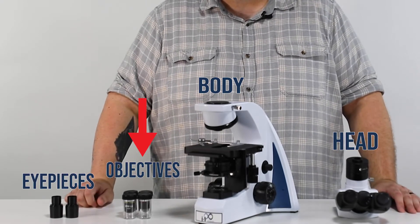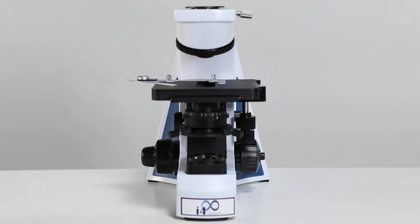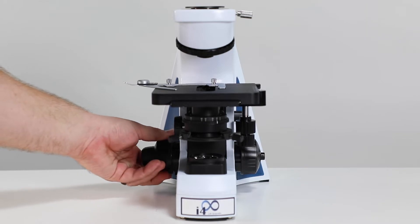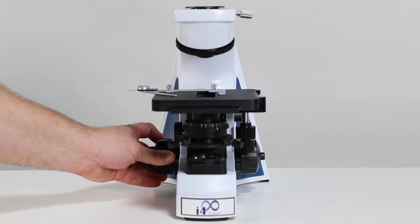We're going to start by installing the objectives. Drop your stage down by turning the course adjustment knob towards you until the stage stops. This will give you plenty of room to install your objectives.